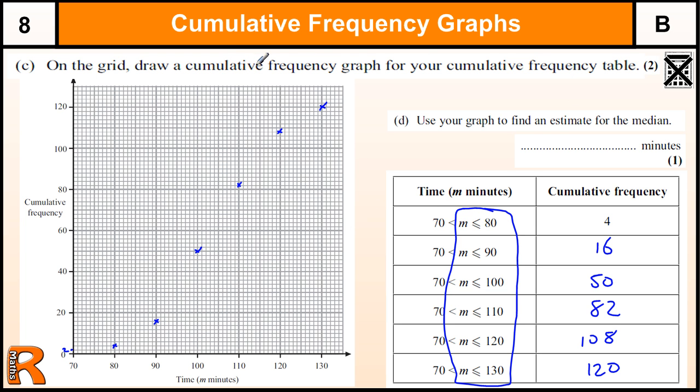Okay, now this is a cumulative frequency graph. In the old days, they used to differentiate between graphs and curves. It's polygons and curves. But now you can either draw a polygon or a curve. Oops, I'm going to do a polygon because it's very difficult for me to draw a curve on the computer. So I'm just going to use straight lines. And this is fairly straight anyway. There's no real, there's a little bit of a curve there and here. But you tend to get this S-shaped curve.